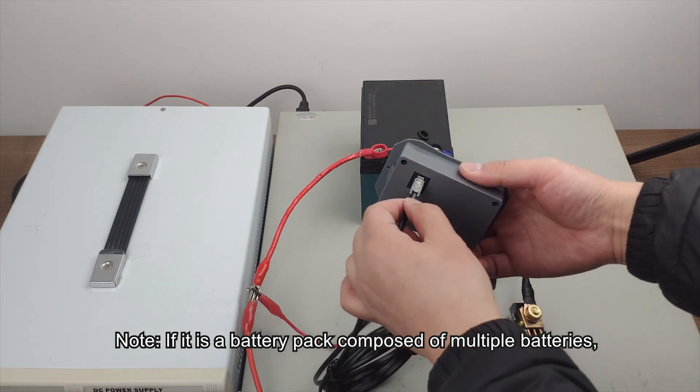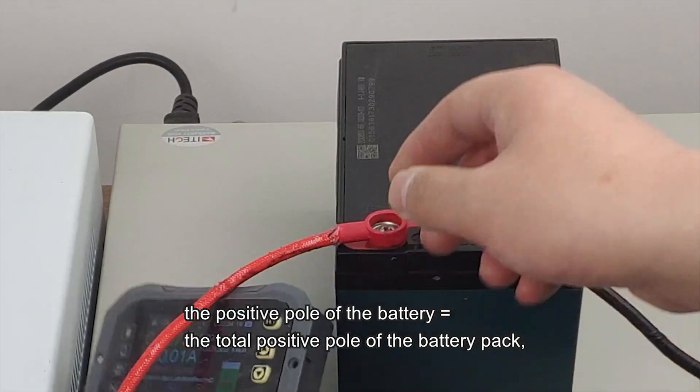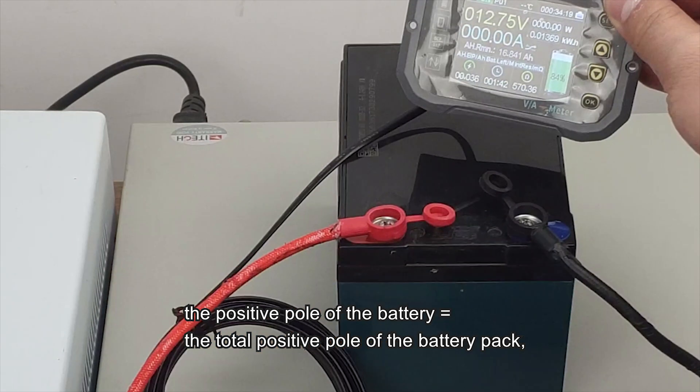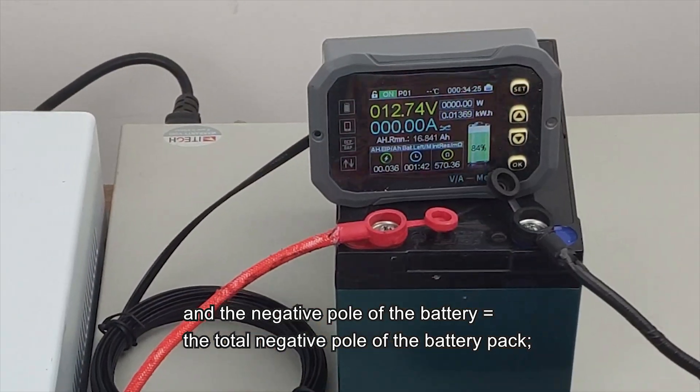Note, if it is a battery pack composed of multiple batteries, the positive pole of the battery equals the total positive pole of the battery pack, and the negative pole of the battery equals the total negative pole of the battery pack.